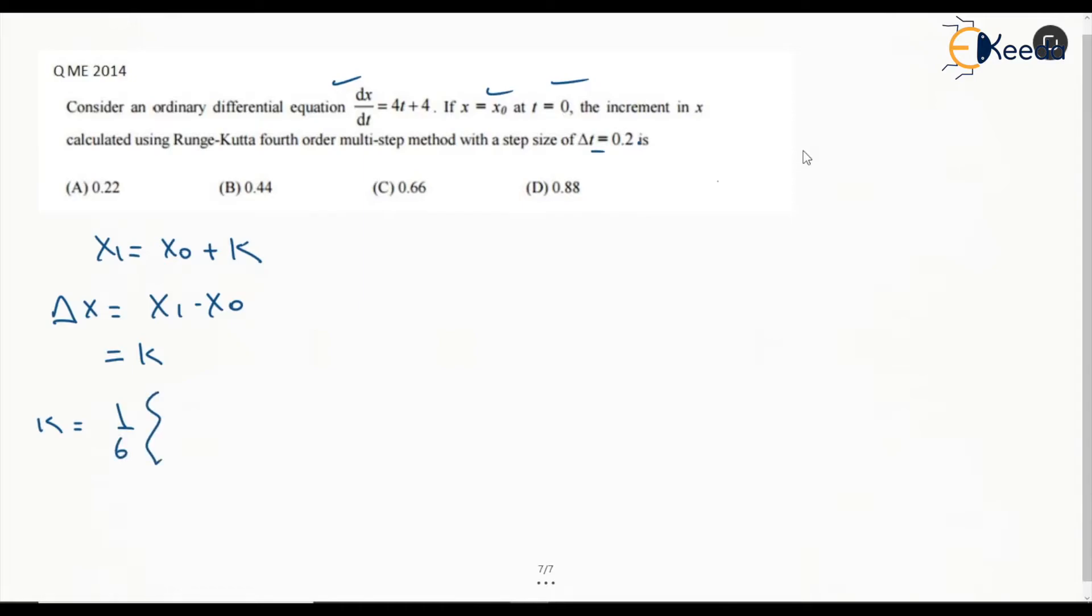The function is already given. I'm writing it as f(t, x) = 4t + 4, because this is your dx/dt, the function required.